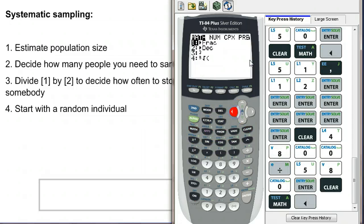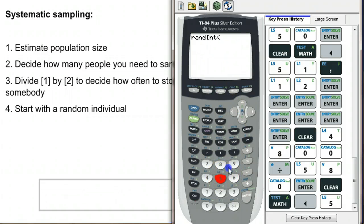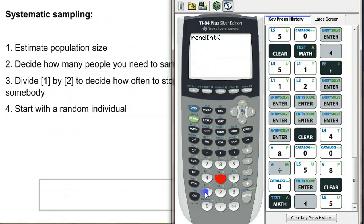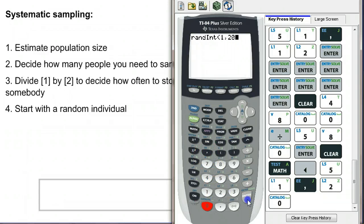We do math, PRB, the fifth one down, randint. And I'm going to do 1 comma 20 because I want a random person between 1 and 20. A random number between 1 and 20. Two.